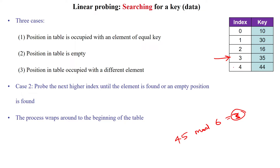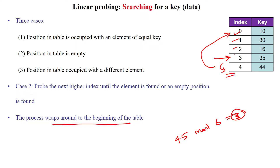We have to start checking the higher indices. Then we reach the end of the table. If the end of the table is reached, we wrap around to the beginning of the table, going to the 0th index. We check index 0, then 1, then 2, until we reach index 3, which was the starting index for this search element.